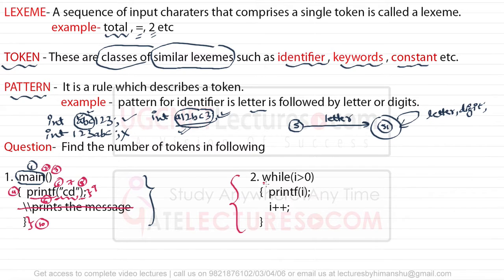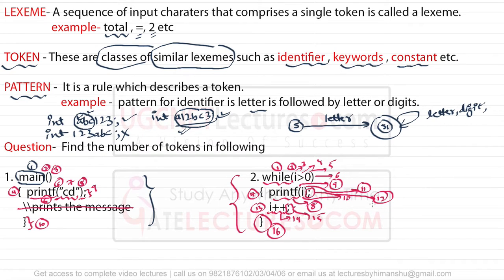If you check the second program: while is first token, opening bracket is second, variable i is third, greater than sign is fourth, zero is fifth, closing bracket is sixth, opening brace is seventh, printf statement is eighth, opening bracket is ninth, i variable is tenth, closing bracket is eleventh, semicolon is twelfth, i is thirteenth, plus-plus operator is fourteenth, semicolon is fifteenth, and closing brace is sixteenth. So in this entire program there are 16 tokens.